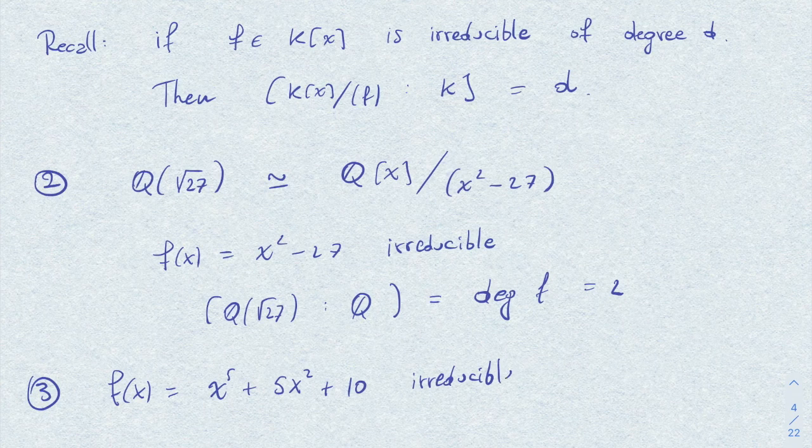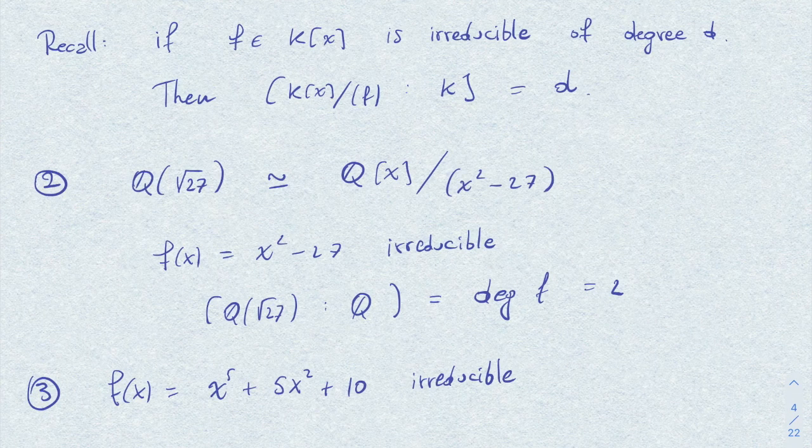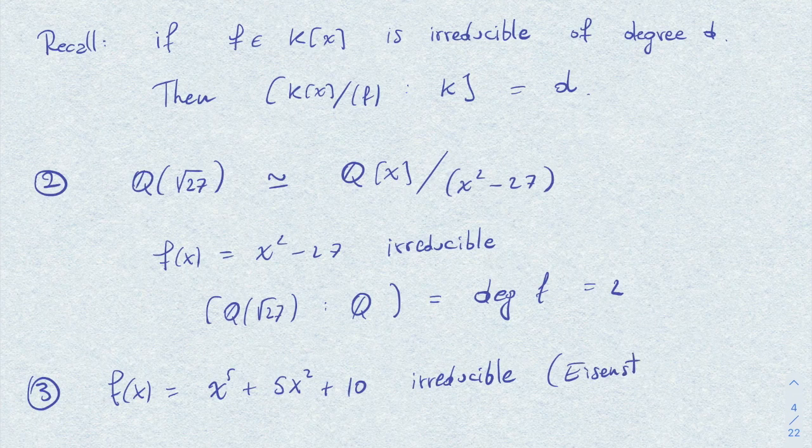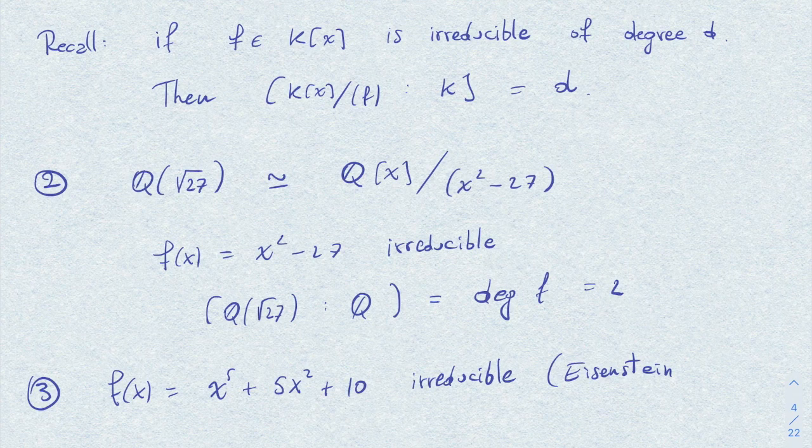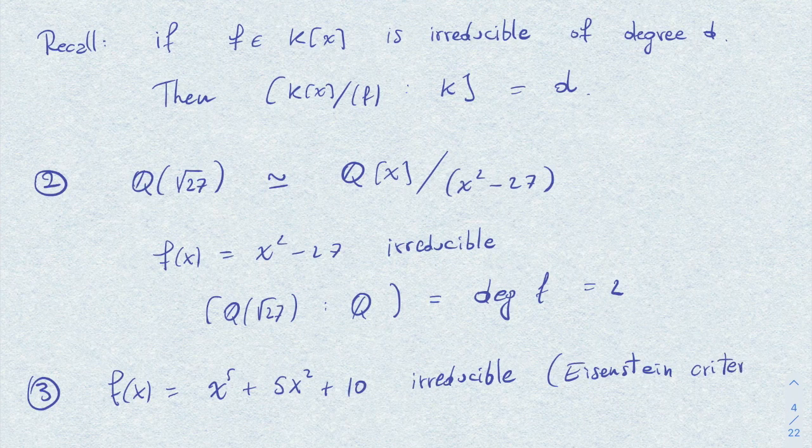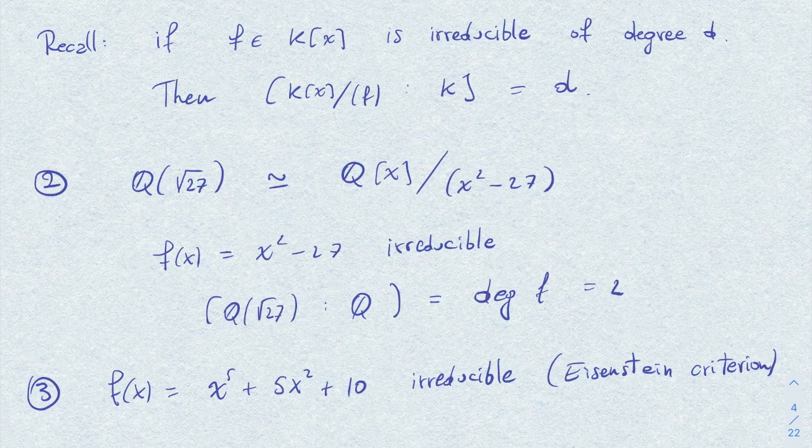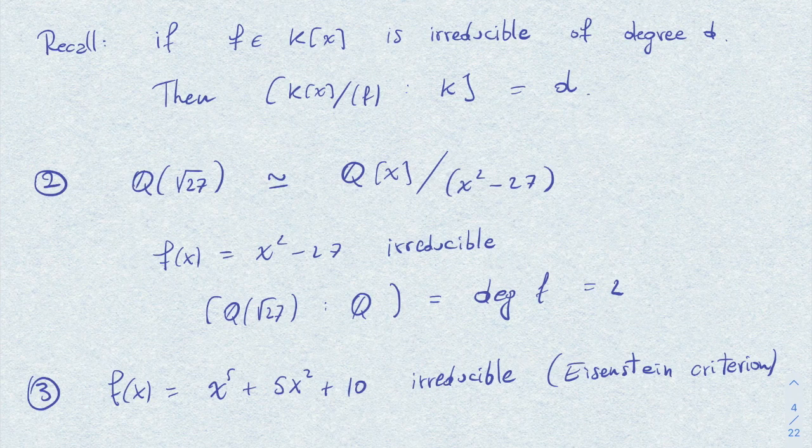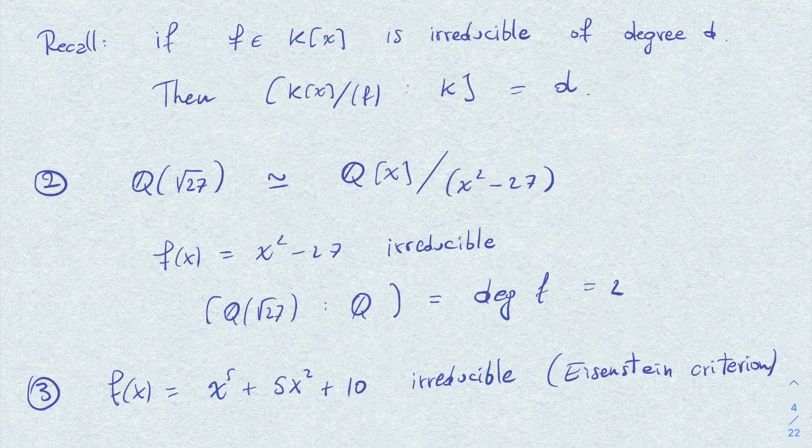By, for example, by applying the Eisenstein criterion. And therefore, since it's degree 5, we get that the degree of our extension is precisely 5.